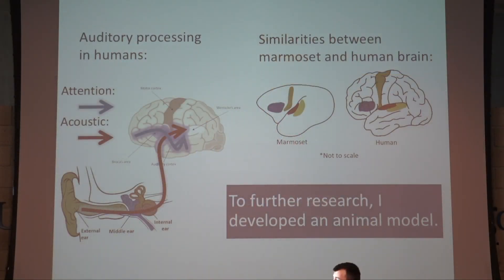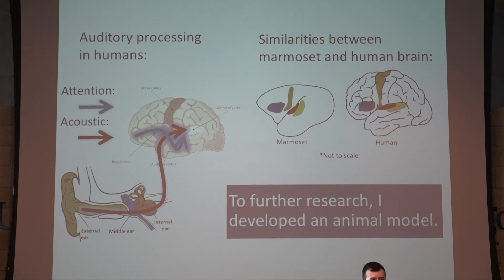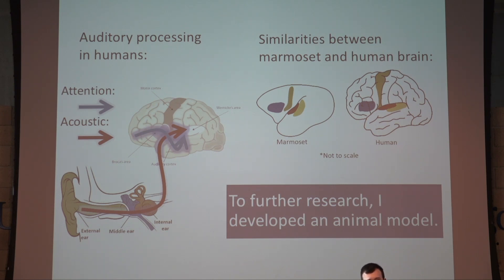Within human research, what we found is that there are two main processes to keep in mind. First is the acoustic pathway that takes in all the sounds from the ears and turns them into an electrical signal, and then the attentional pathways from the front of the brain that help tease apart and pay attention to the specific voices or sounds you care about.